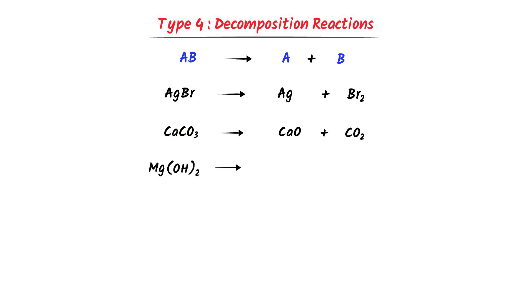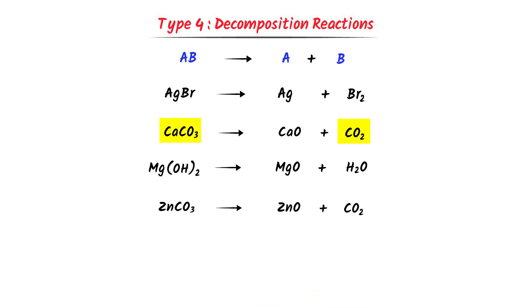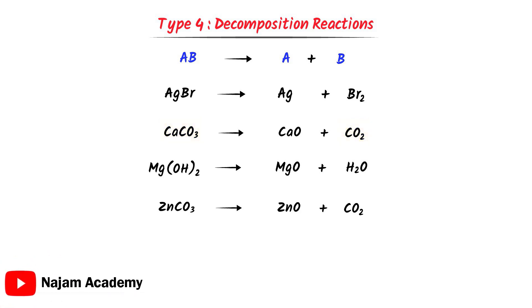Thirdly, consider magnesium hydroxide — it decomposes into magnesium oxide plus water. Remember that hydroxides like magnesium hydroxide always produce water in decomposition reactions. Lastly, consider zinc carbonate — pause the video and try to predict its products. It is a carbonate, so it decomposes into zinc oxide plus carbon dioxide gas. Remember all these decomposition reactions.